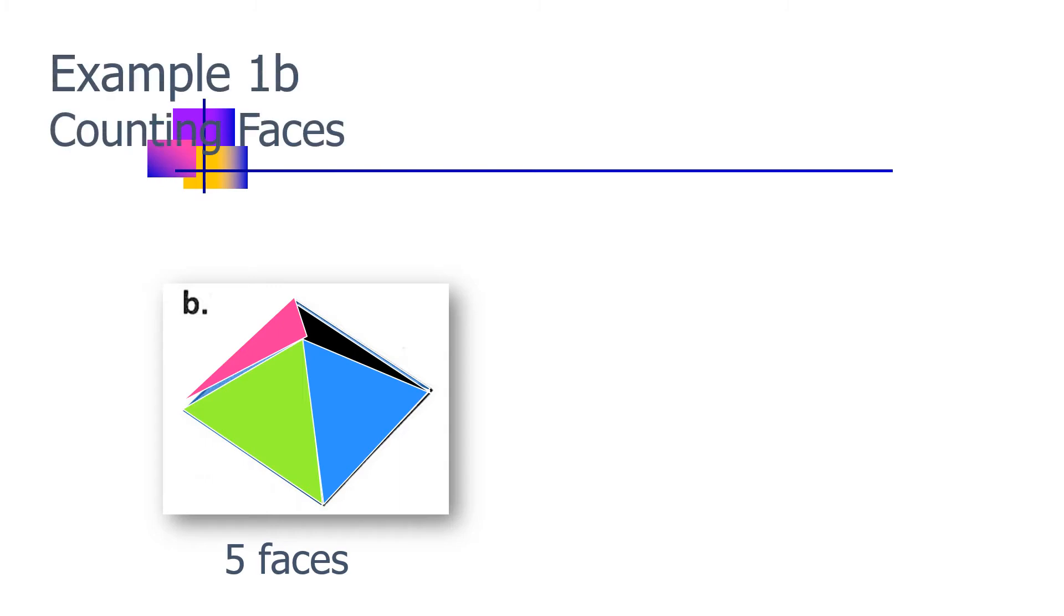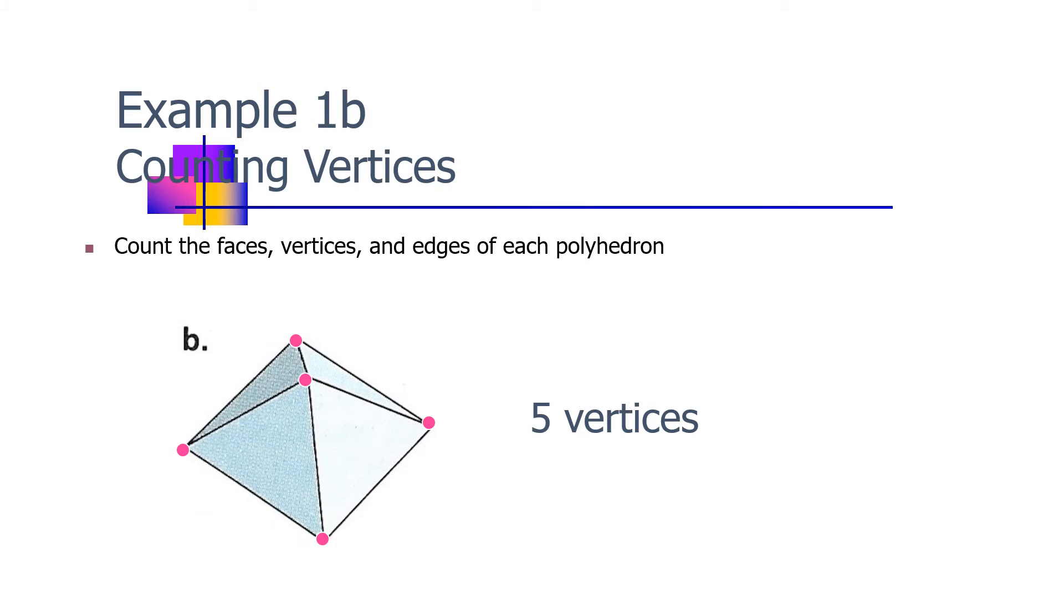Next example, letter B. We have five faces now. Let's count the vertices: one, two, three, four, five. Yes, there are five vertices. And then let's count the edges: one, two, three, four, five, six, seven, eight.